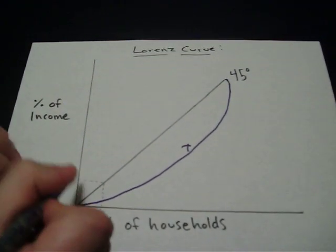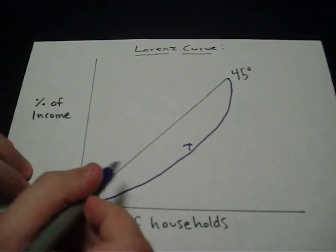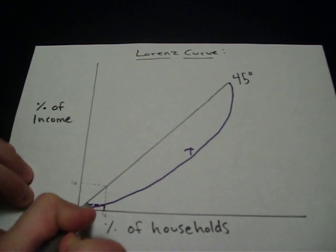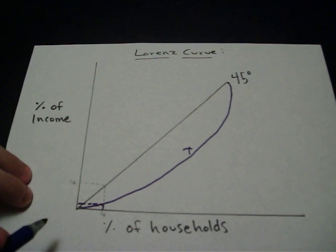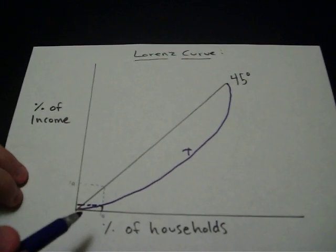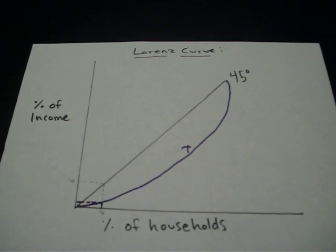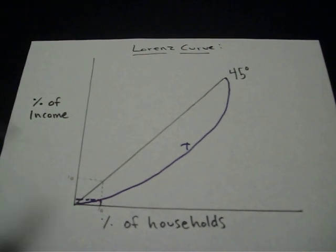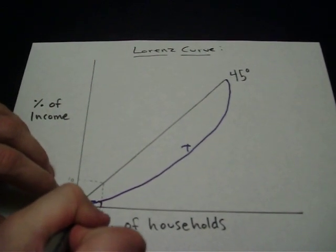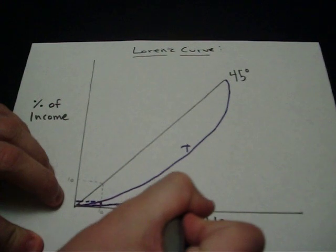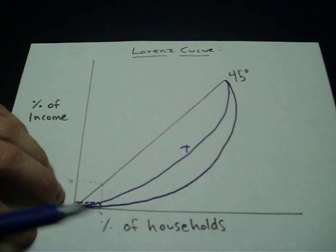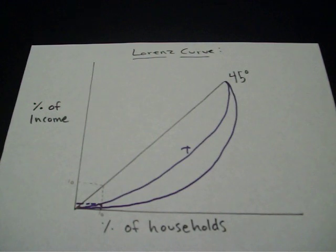So if we look at it now, 10% of the households are certainly not getting their fair share of the income. This would show that there's an unequal distribution of income. If the curve goes out even more, it would show an even more skewed income distribution relative to the percentage of households.